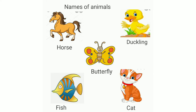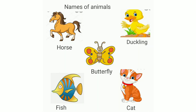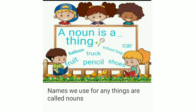What is a duckling? Duckling is a name for a baby duck. Because it is a name, it is a noun. The names we use for animals, birds, and insects — horse, duckling, butterfly, fish, cat — are all names for particular species, so they are naming words and therefore all nouns.